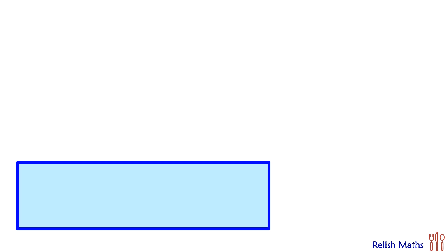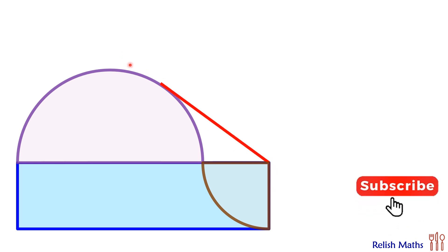Hello, welcome to this interesting question. Given to us is a rectangle, on top of it we have got a semicircle, and in this remaining part we are fitting a quadrant. We are drawing a tangent from the center of the quadrant to the semicircle.